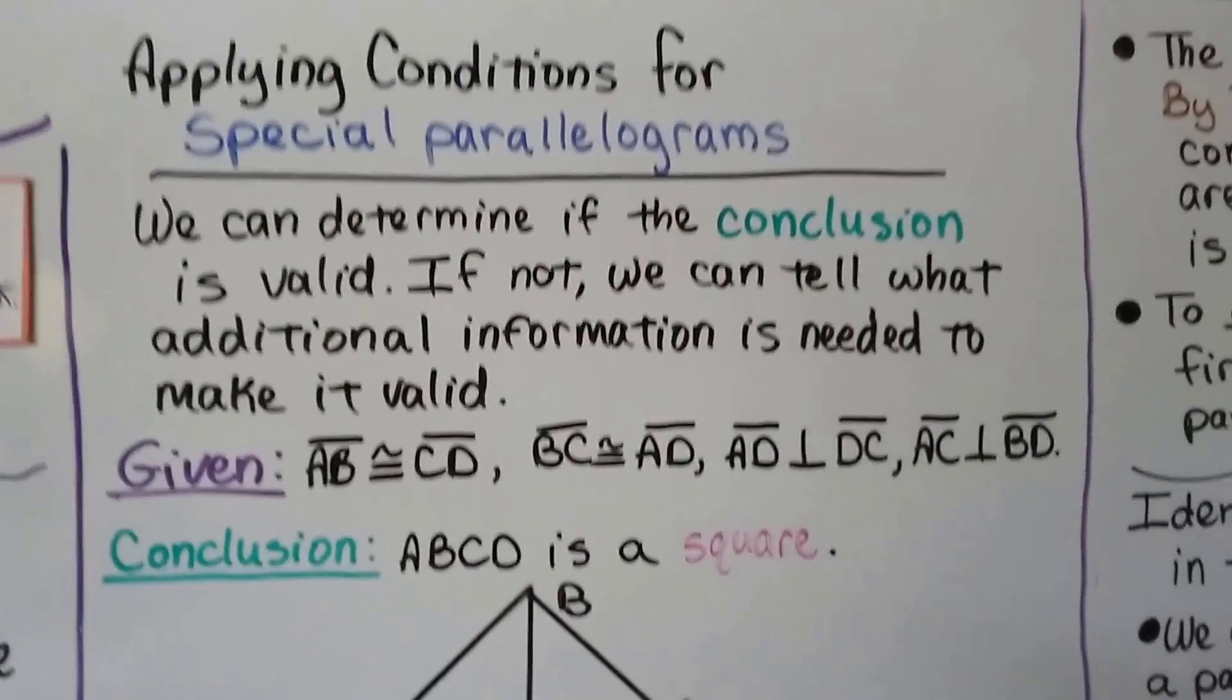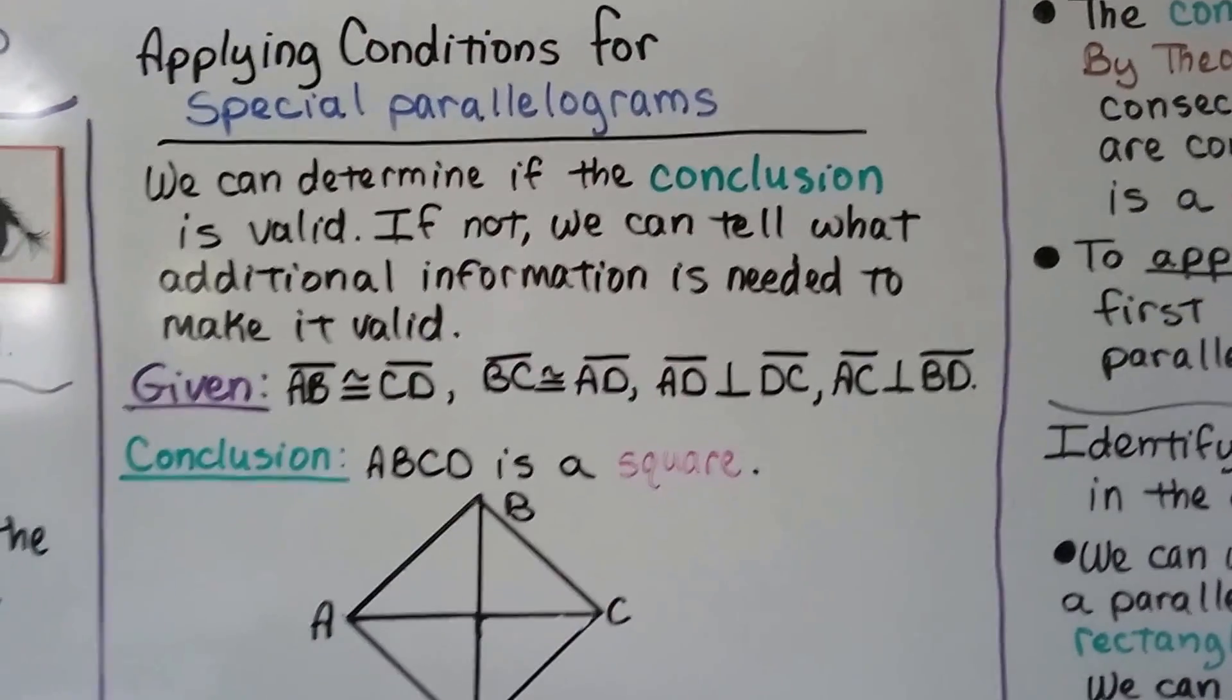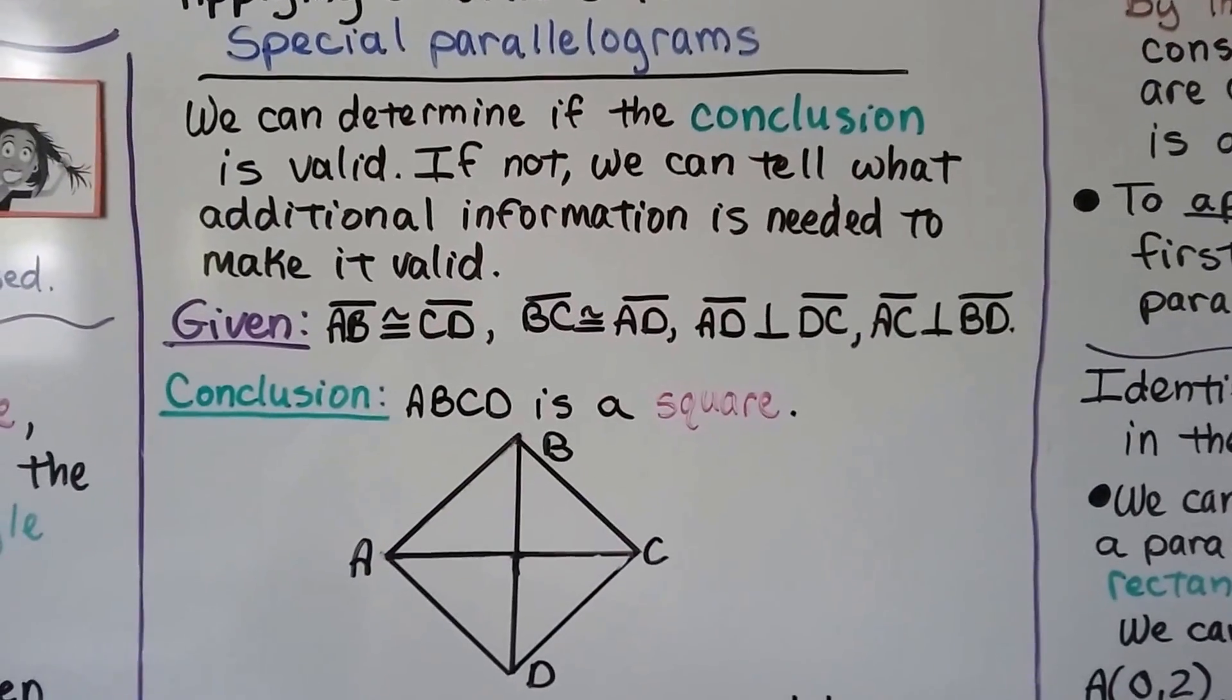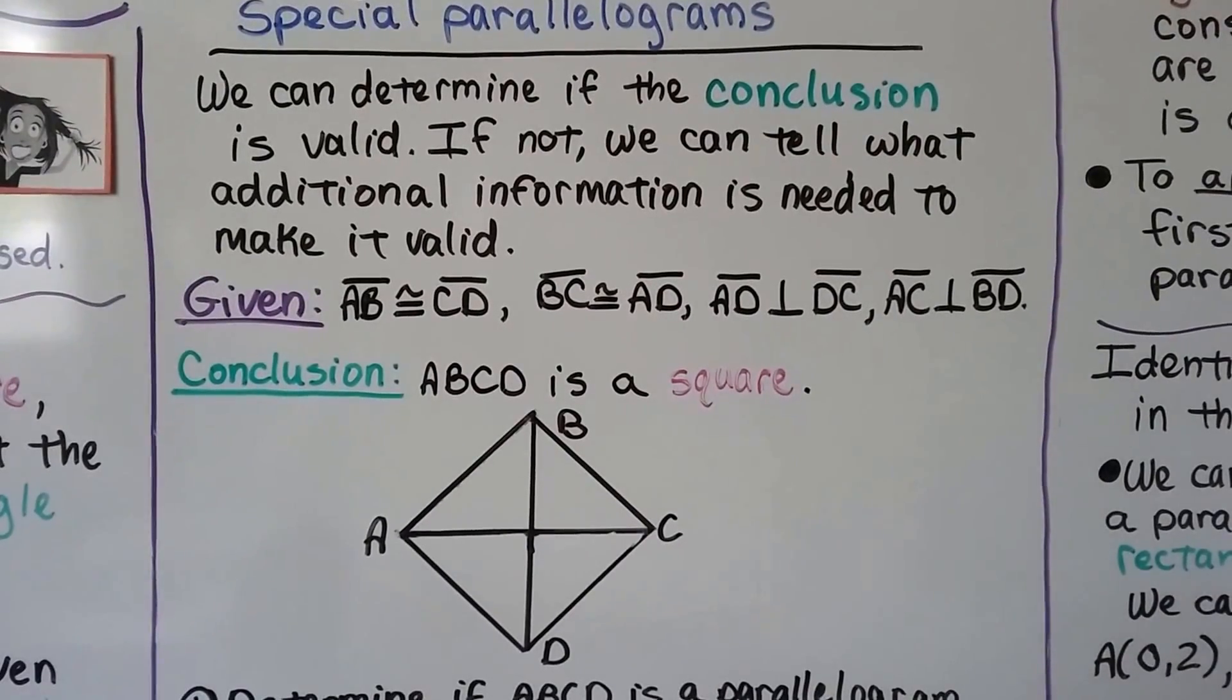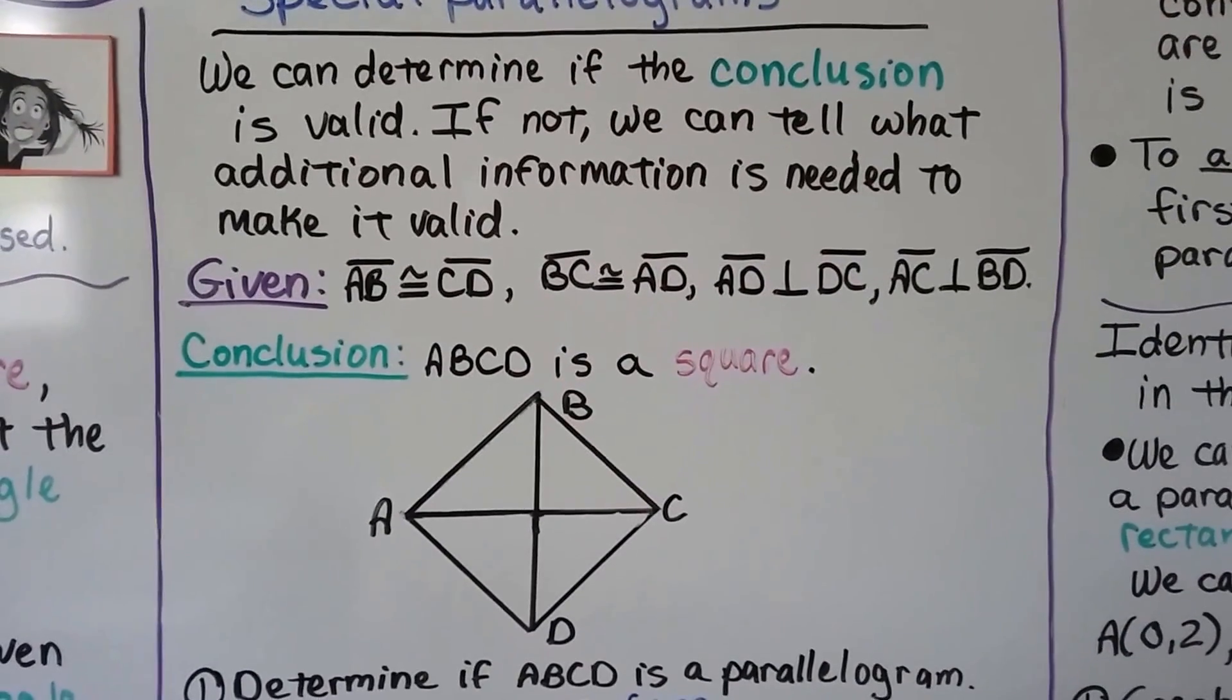So here's applying conditions for special parallelograms. We can determine if the conclusion is valid. If not, we can tell what additional information is needed to make it valid.